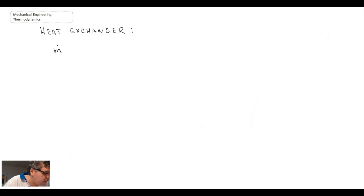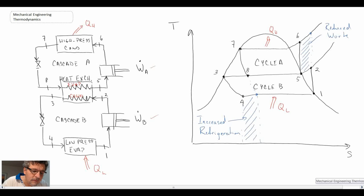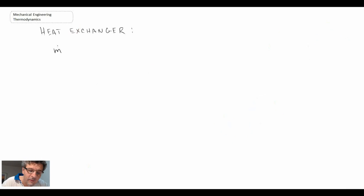Looking at the performance of the heat exchanger, what we have is the mass flow rate of fluid from cycle A and the mass flow rate of fluid from cycle B. We know the change in state or change in enthalpy between each of those fluids. So fluid in cycle B times its change in enthalpy.